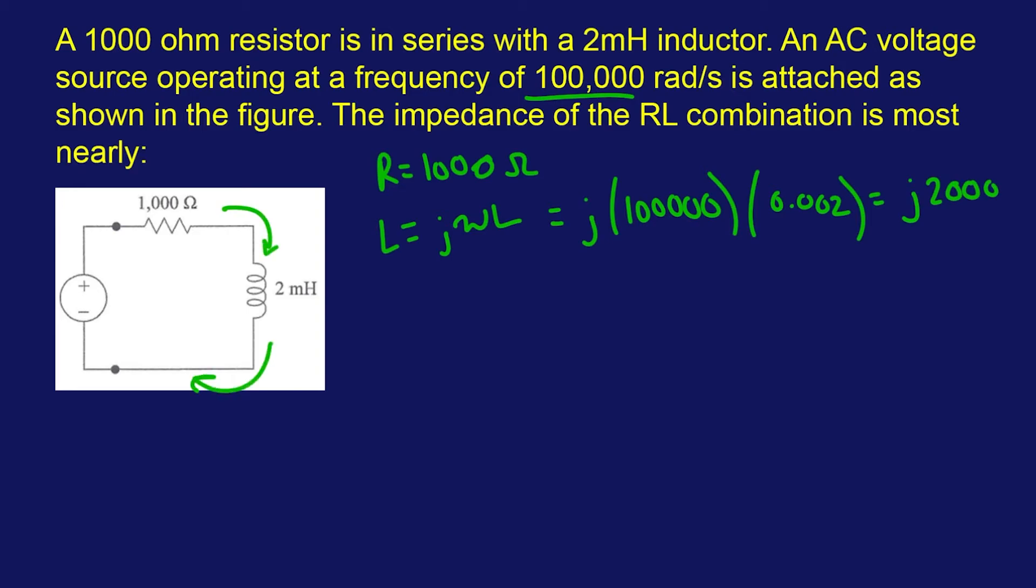The thing I forgot to tell you is this is in series, so impedance like any series components, we just add them up. 1000 ohms impedance is a natural number on the real side, and we have the imaginary number 2000j, so this is going to be your impedance.